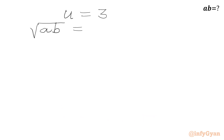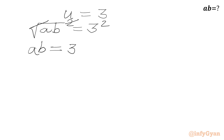Since u equals √(ab) equals 3, we square both sides. The square root and square cancel, giving our final answer: ab equals 3² equals 9.